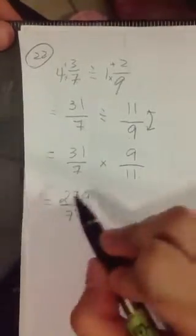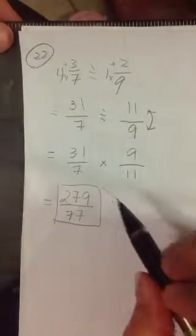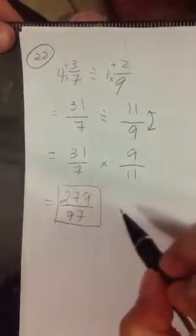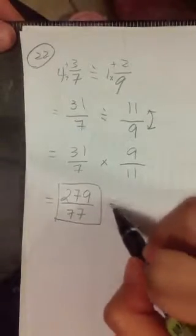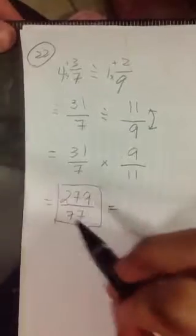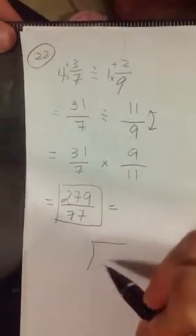And that would be your answer actually. But if they want us to express our answer in mixed number, then we will want to see how many times 77 goes into 279. So in this case, we will use long division.